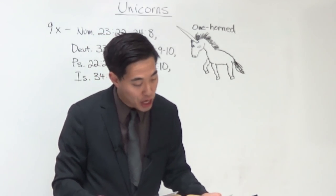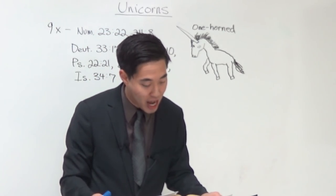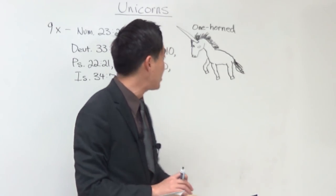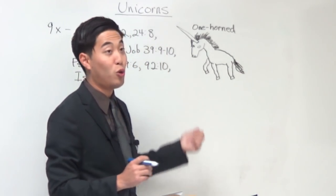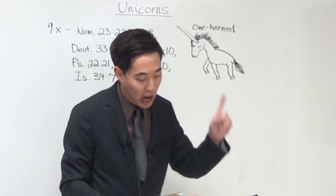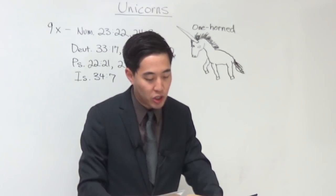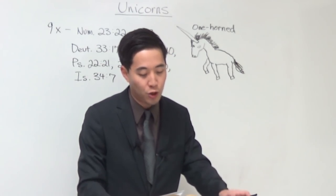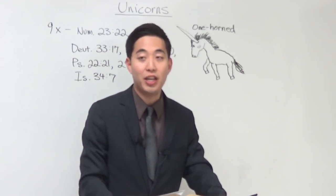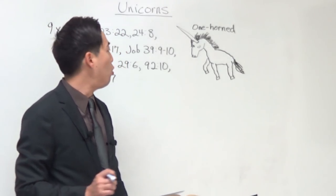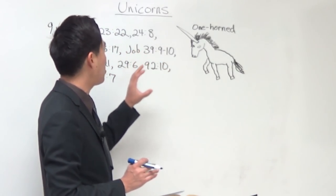Another one is Psalms 92, verse 10. Notice over here, this is not an ox with two horns. It shows over here a one-horned creature, Psalms 92, 10. But my horn shalt thou exalt like the horn of a unicorn. I shall be anointed with fresh oil. So we can see over here, combining these two verses, it is very possible that this could be the unicorn depicted in myths.